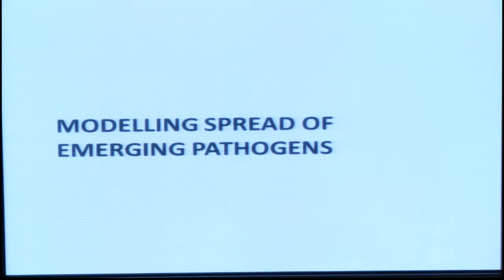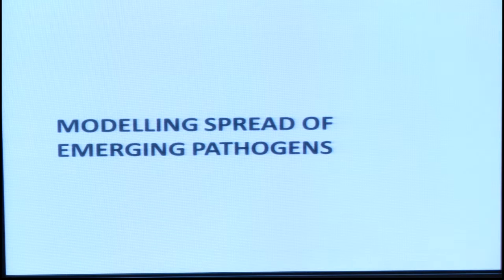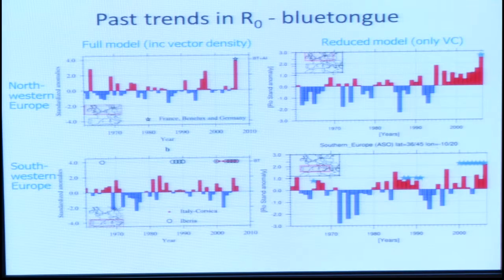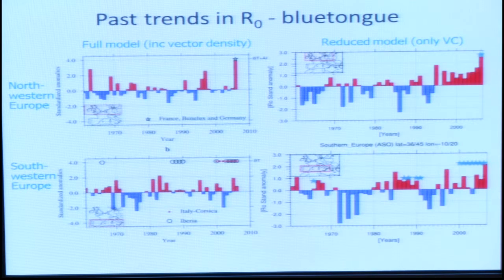Now I'll go on to my own work on climate as a driver — that's my particular expertise. I have a background in vector-borne diseases, and in particular a disease called bluetongue. Bluetongue is transmitted by Culicoides biting midges, and it's emerged in Europe on a big scale, with a whole series of outbreaks going back to 1998, including a big outbreak that started in Northern Europe in 2006. One of the big questions was whether its emergence was in any way driven by climate change.